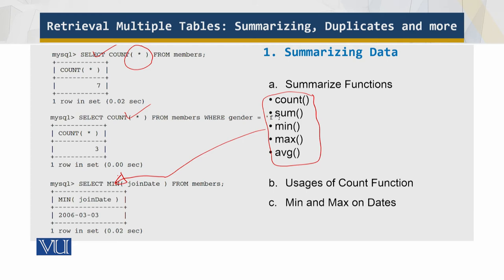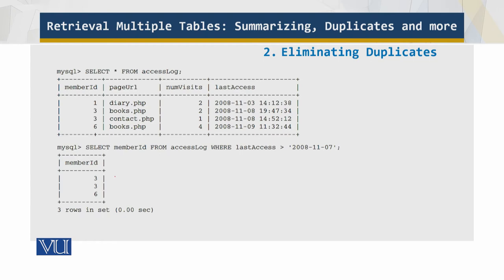So how do we eliminate the duplicates? Occasionally a query returns more data than you actually need, even when using WHERE and LIMIT clauses. Say your access log table contains the following data. This is your access log, and what we can see over here is the member ID is repeating, but these URLs are different.